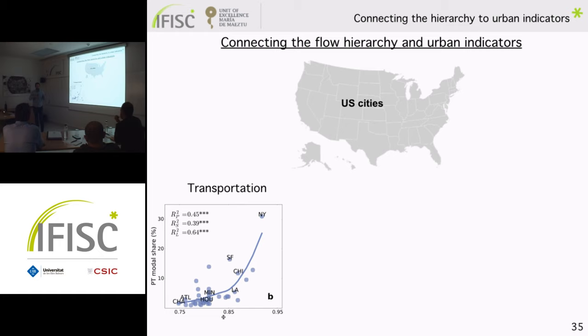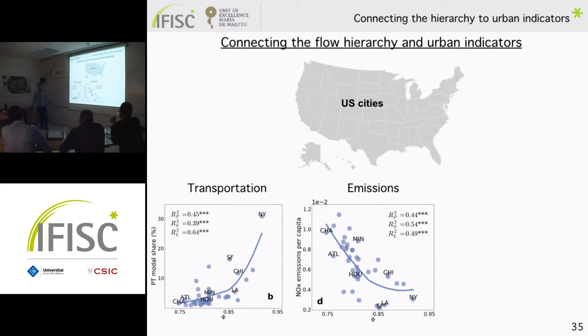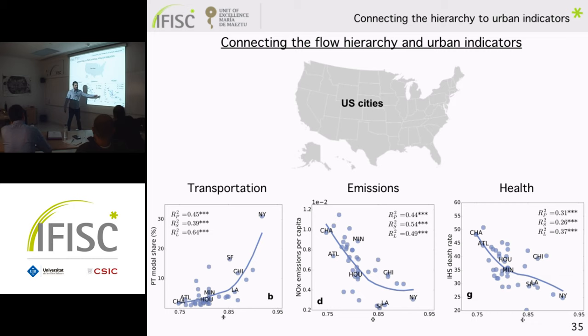If cities are more hierarchical, there is a lower use of cars and also lower emission of pollutants. Here I show emissions of NOx as a function of flow hierarchy φ, and there is a trend that cities with higher φ also have lower pollutant emissions — a relation also found with different pollutants. Taking one more step: if there is a relation between φ and pollutant emissions, could there be a relation between φ and health in cities?